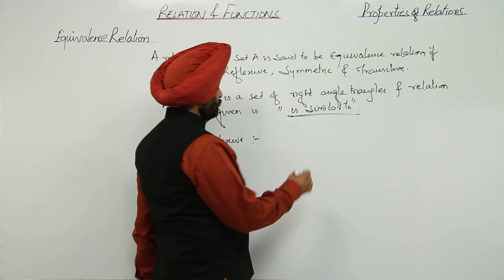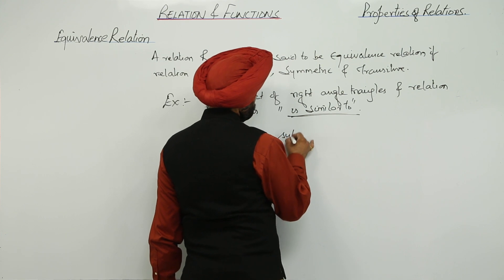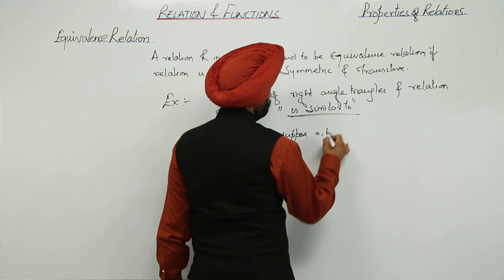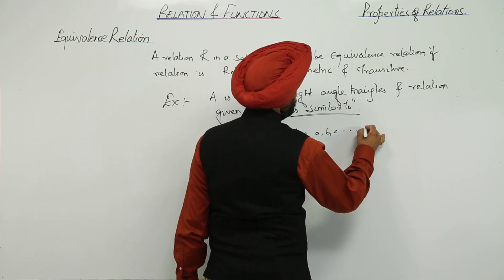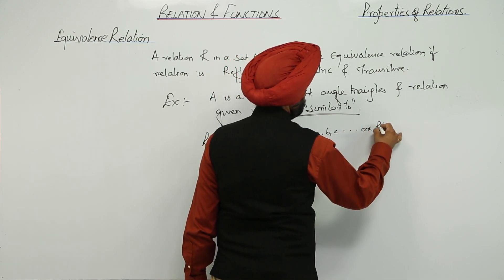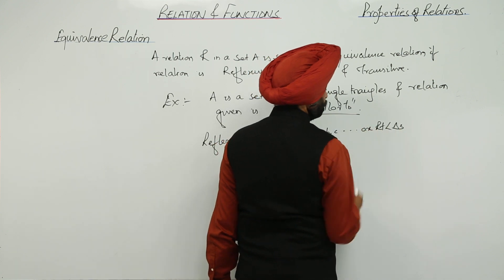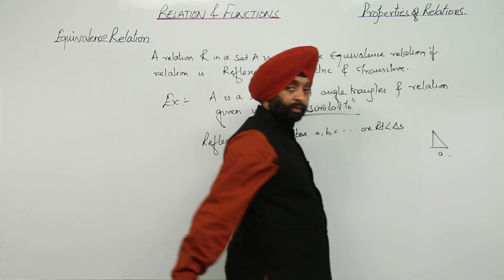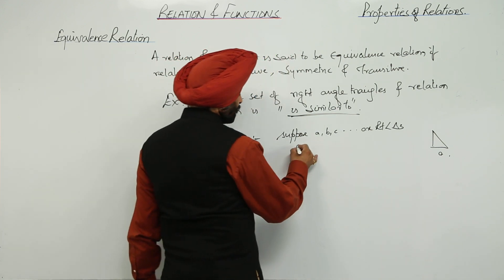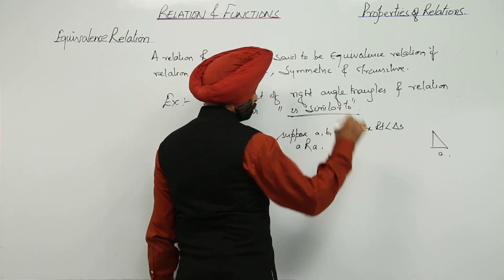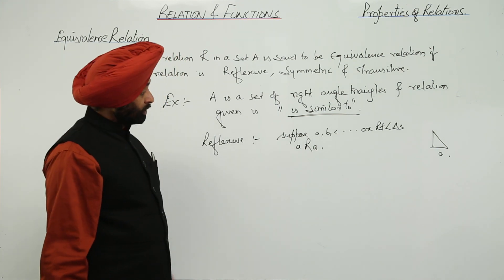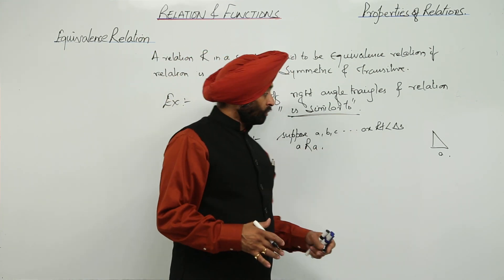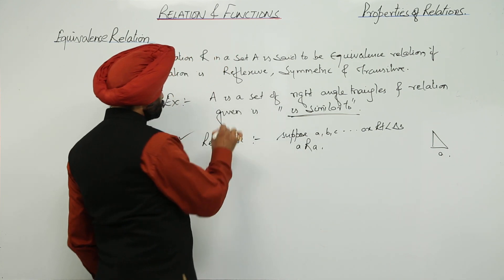Now suppose A, B, C are right angle triangles. Now suppose this is triangle A. Now A is in relation with A, and what is the relation? A right angle triangle is similar to itself. Okay? So therefore, reflexive is true.